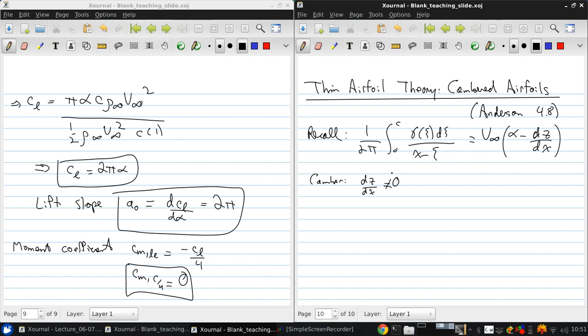Now again, the solution to this equation is beyond the scope here, but using the same transformation as before, we can get the solution to be gamma of theta equals 2v infinity, a constant a0 times 1 plus cos theta over sin theta plus an infinite series of coefficients an times sine n theta, where again theta is 0 at the leading edge and theta is pi at the trailing edge.